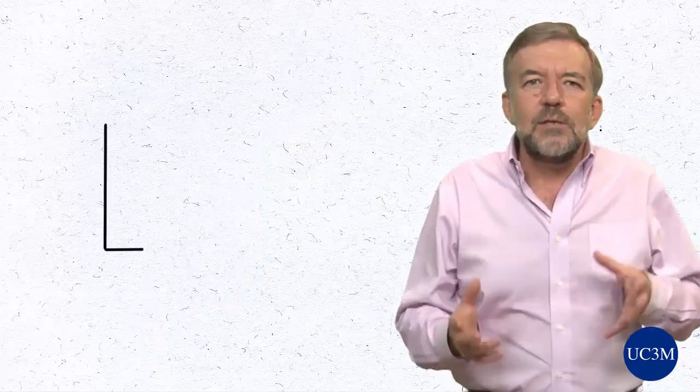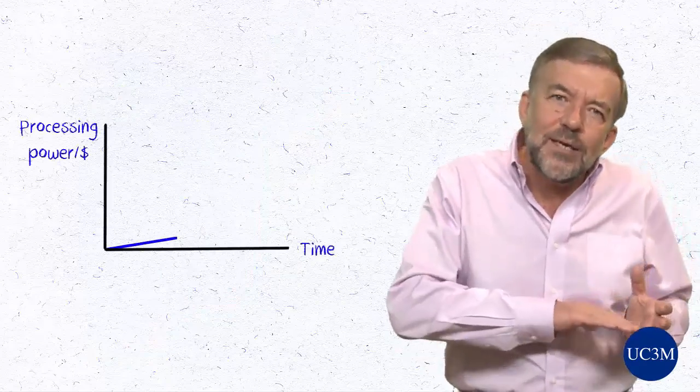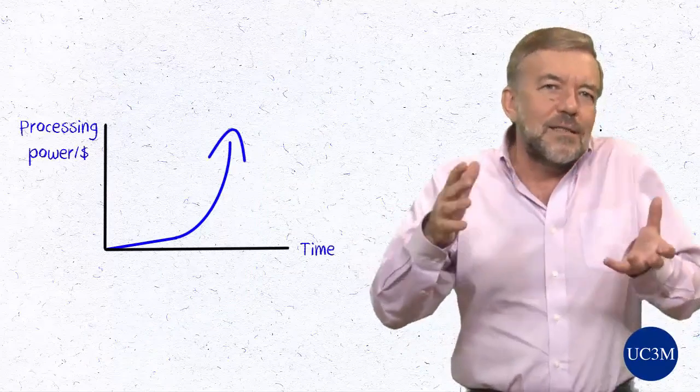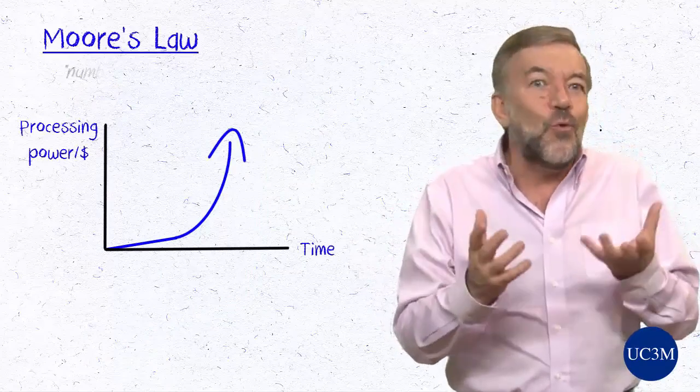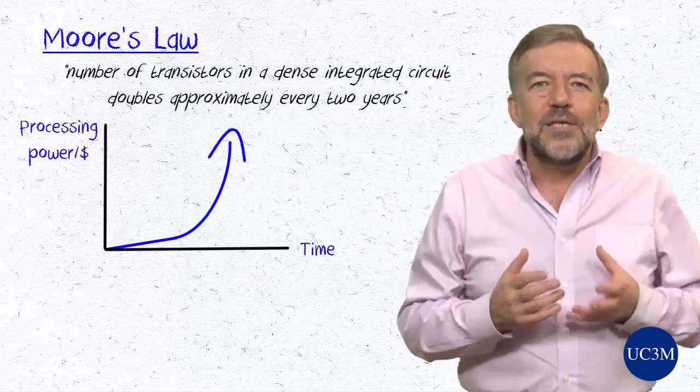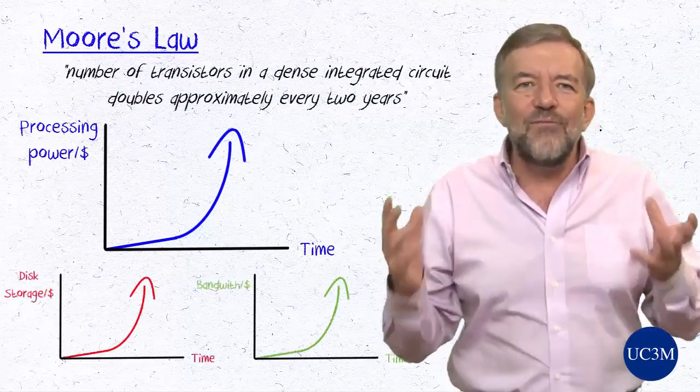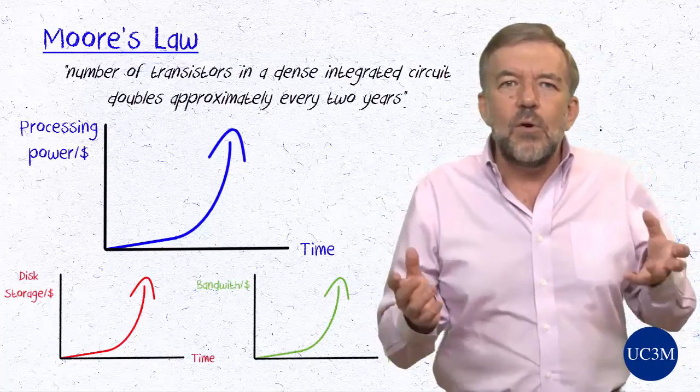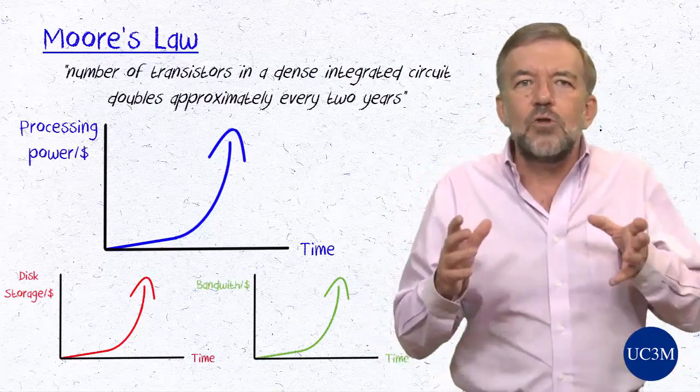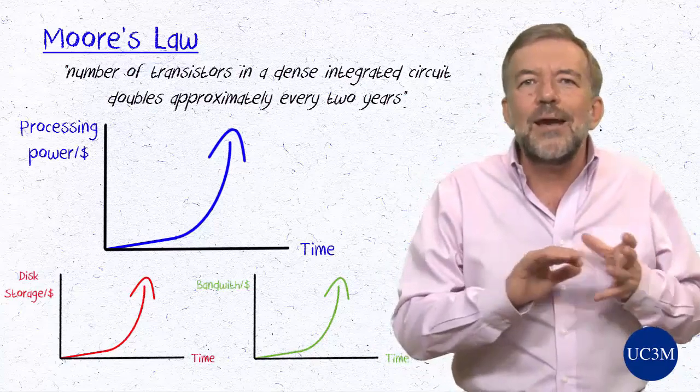The chip's processing power per dollar of investment keeps on rising exponentially, as anticipated by the so-called Moore's law. The storage and communication bandwidth are evolving in the same vein. Internet's growth in both number of nodes and total data transfer continues unabated.